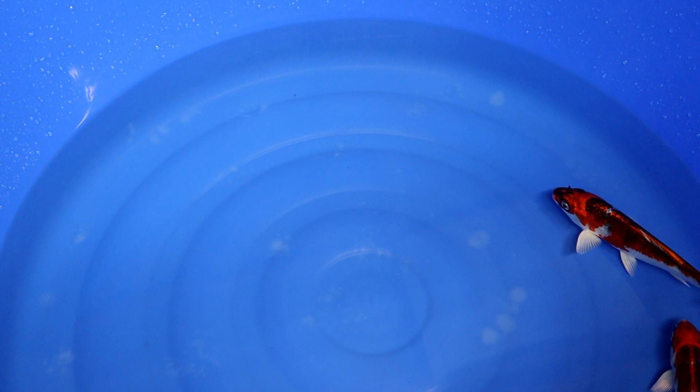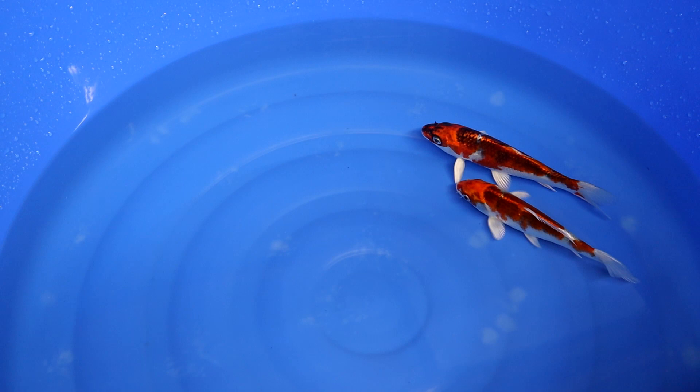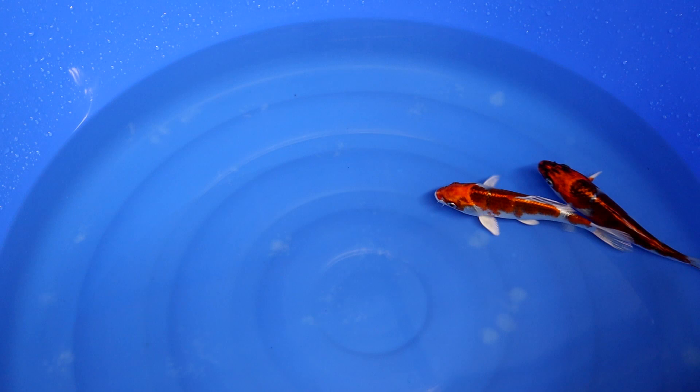These kind of black scales you can also find on the Matsuba variety. And sometimes you will see that on this variety the orange can almost become red, and when it becomes red it is referred to as a red Kujaku.